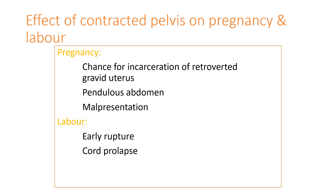Now let us see the effect of contracted pelvis on pregnancy and labour. During pregnancy, if a contracted pelvis is present, there is a chance for retroversion of the uterus — the upper segment or fundus of the uterus will get retroverted backward and may become caught inside the maternal pelvis. This is known as incarceration. Retroversion means a backward movement where the fundus comes down to the level of the symphysis pubis.